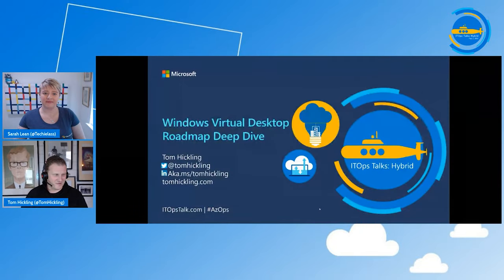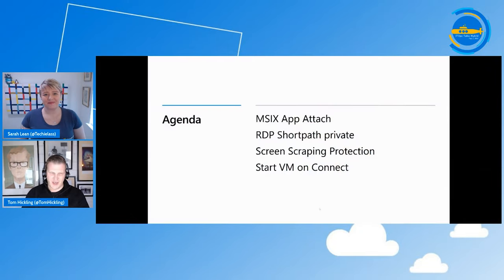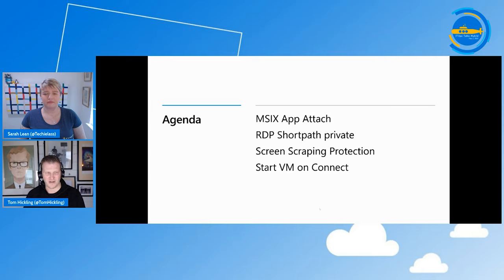Let's move on to the roadmap — I'll share some information around that now. We're going to look at four areas or capabilities on our roadmap. The first is MSIX App Attach. Then we'll talk about RDP Short Path Private, which has a hybrid connotation. Then screen scraping protection, and finally Start VM on Connect, which is currently in private preview — so this is a bit of a sneak peek at that capability.